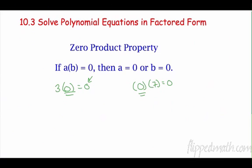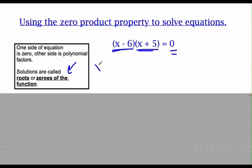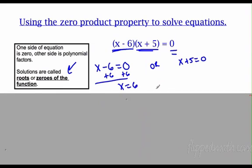One side of the equation has to be 0 and the other side is the polynomial factors. Remember, factors are things you multiply. Here's one factor: (x minus 6), here's the other: (x plus 5). Since one of these must be 0, I set them both equal to 0: x minus 6 equals 0, or x plus 5 equals 0. Adding 6 gives x equals 6, subtracting 5 gives x equals negative 5.